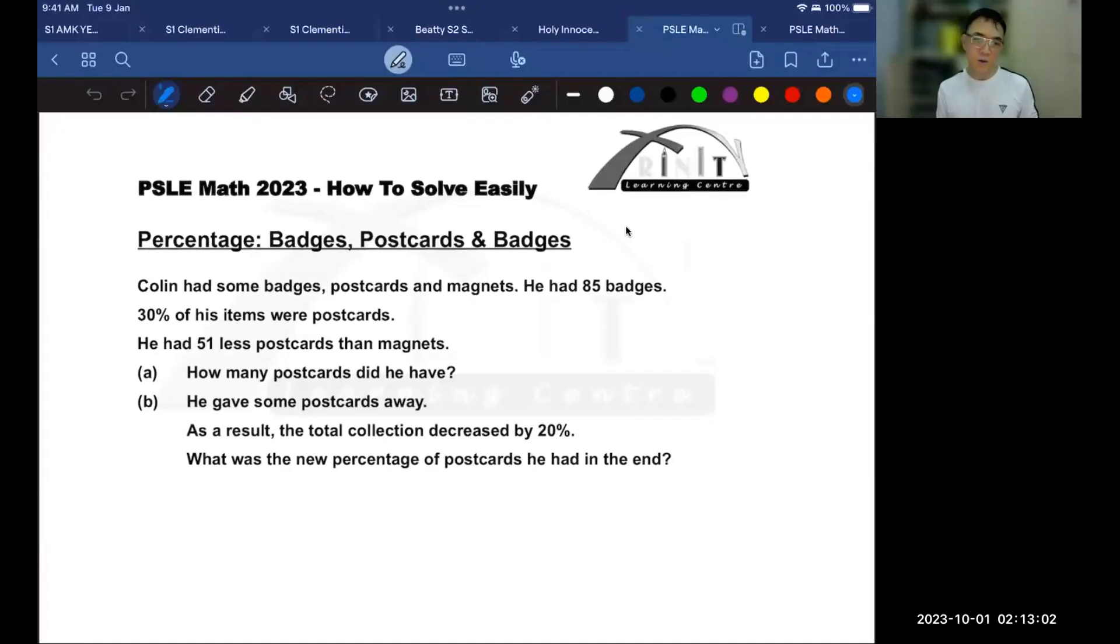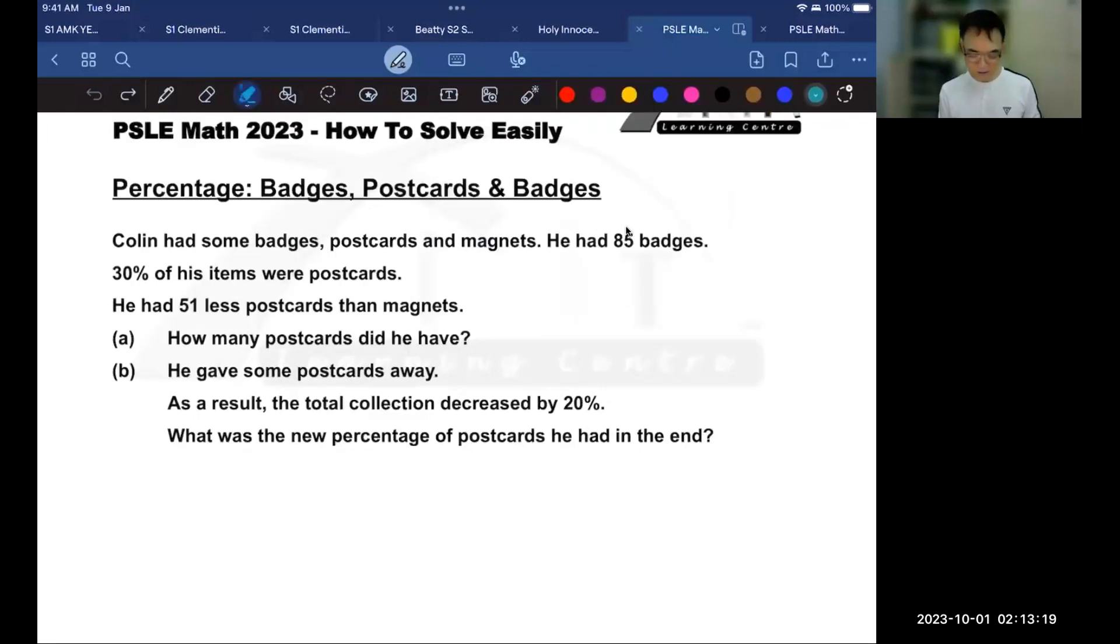As usual, we should always begin by highlighting the keywords to the question. So here are the keywords. There were some badges, postcards and magnets. Colin had 85 badges and 30% of his items were postcards. Also...